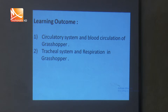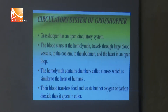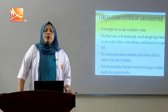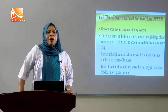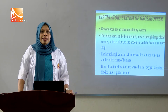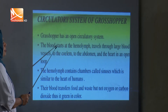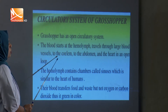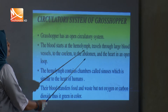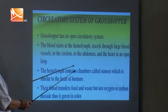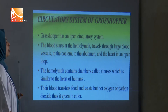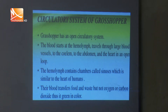Let us start with the circulatory system in Grasshopper. It is poorly developed and known as an open circulatory system, or lacuna type. In this circulatory system, blood — known as hemolymph — is pumped through the tubular heart, comes to the coelom, and bathes the tissues. The blood travels through large blood vessels to the coelom in the abdomen, and the heart is an open loop. The hemolymph contains chambers called sinuses.